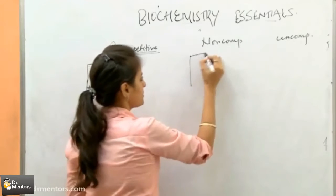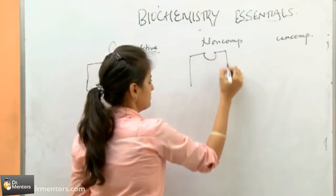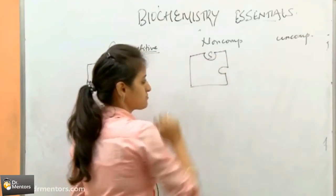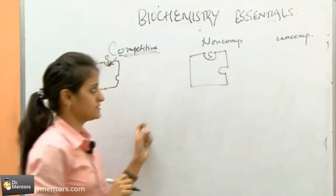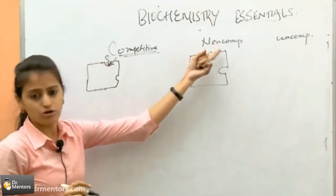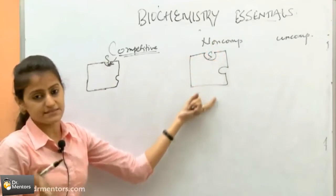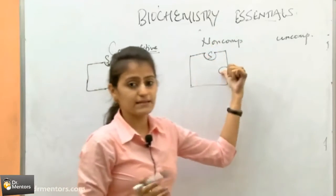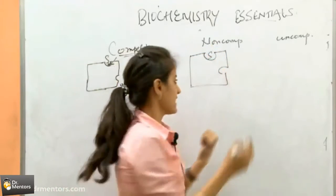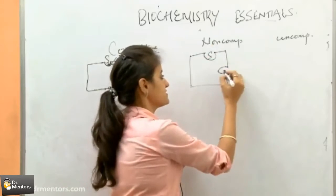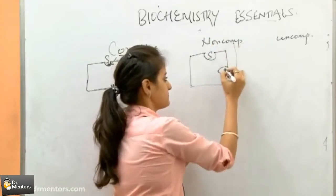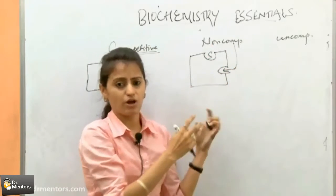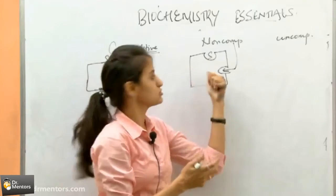In non-competitive inhibition, this is a substrate binding site. Non-competitive means the inhibitor is not competing with the substrate, so it will bind at some other site.